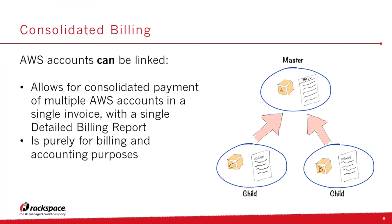Consolidated billing is a method of linking two or more AWS accounts together. At its core it's a combined view of AWS charges across all linked accounts, rolling up into a single master payer account. You can get cost reports for individual accounts or one master detailed billing report. Importantly, consolidated billing is strictly an accounting and billing feature — it's not a method for enforcing policy, identity management, or sharing compute resources between accounts.